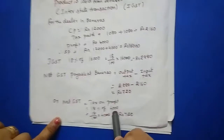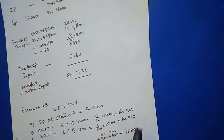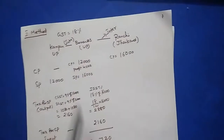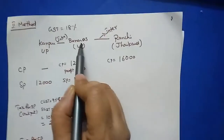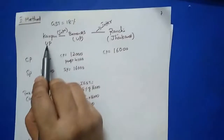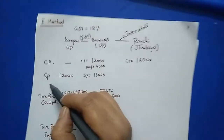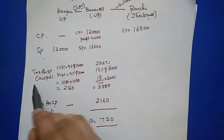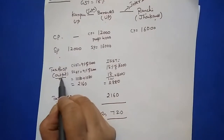You can also use the shortcut: net GST = tax on profit = 18% of 4,000 = 720 rupees directly. Now the second method - using a column format. Kanpur in UP, Banaras also in UP (intra-state), then Banaras to Ranji is interstate. Make columns for CP, SP, tax for SP (output tax), and tax for CP (input tax). The difference gives net tax.